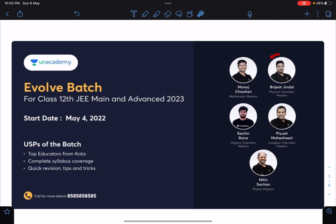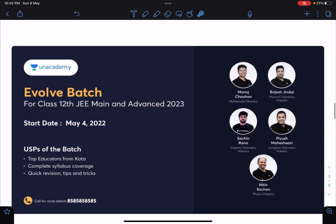So Monachohan sir will be taking maths and Brijesh Jindal sir, Piyush Maheshwari sir and Sachin Rana sir will be handling the chemistry and I will be taking the physics for it. So those who want to join for JEE 2023 for both 11th and 12th syllabus, they can choose this batch.